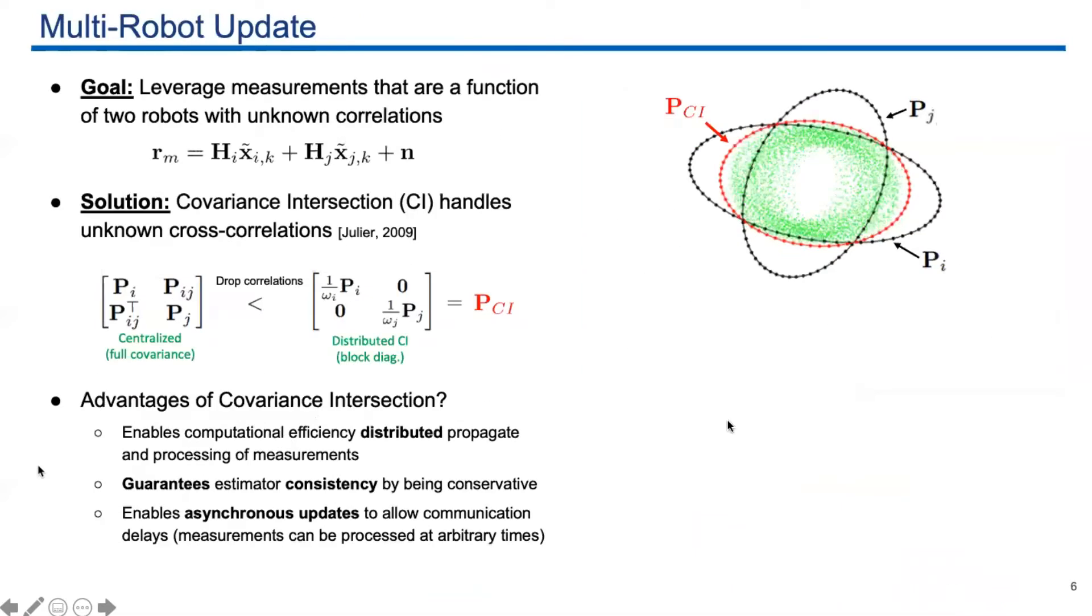As I said, we ignored the cross covariance. But how to handle the unknown cross covariance? Here we use covariance intersection. As shown in this figure, these are the covariance ellipse. You have the covariance for robot i and robot j. And the green dot represents the unknown joint covariance of robot i and robot j. So you can see CI algorithms provide a covariance that will bound this unknown covariance. In other words, we can guarantee our estimate is consistent by using CI.